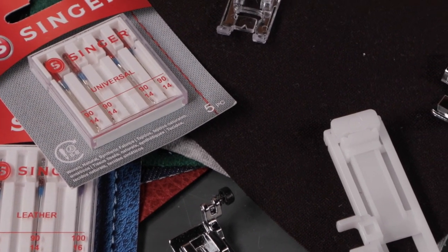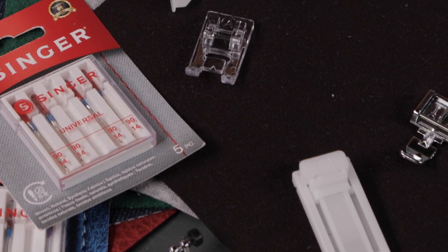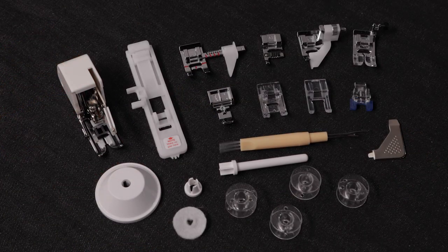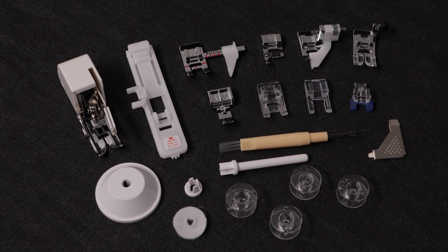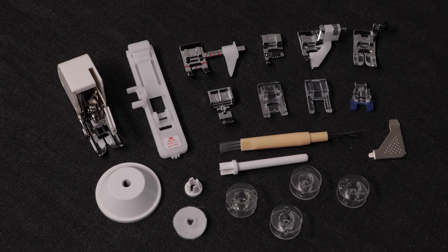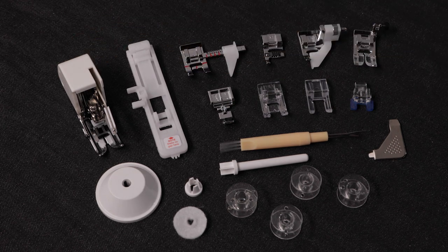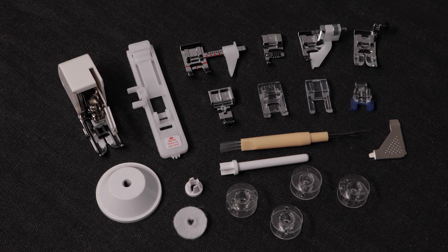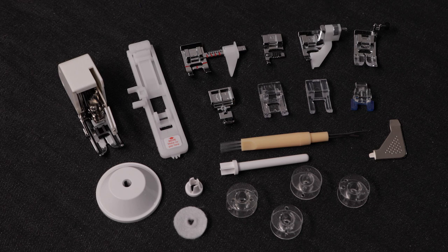In this segment we're going to talk about needles and accessories. Your machine comes with an assortment of presser feet and other essential accessories. You get an even feed walking foot, and that's used for sewing thicker layers like quilts or even napped fabrics like velvet and corduroy.